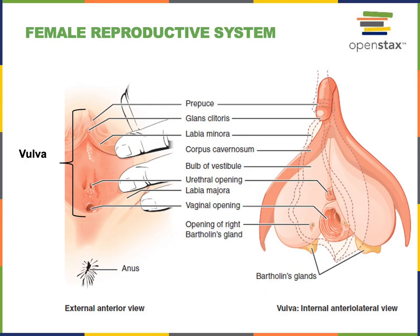The external genitalia in women is known as the vulva. The vestibule of the vulva is the region that contains the vaginal opening and the urethral opening, and it is located between the labia minora, which are thin hairless folds of skin. The labia majora are the folds of skin forming the lateral borders of the vulva.